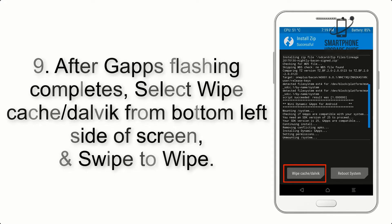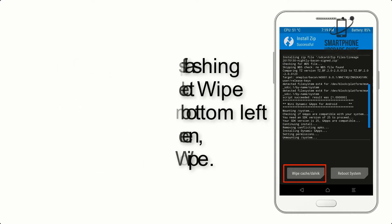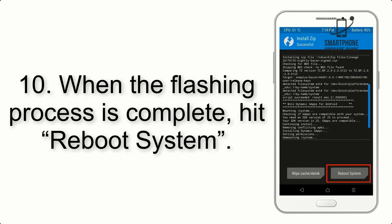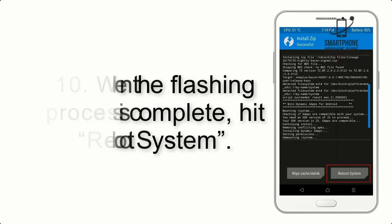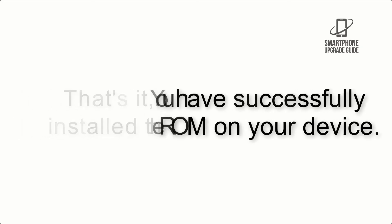Step 8: Flash the GApps zip package in the same manner. Step 9: After GApps flashing completes, select Wipe Cache and Dalvik from the bottom left side of the screen and swipe to wipe. Step 10: When the flashing process is complete, hit Reboot System. That's it — you have successfully installed the ROM on your device.